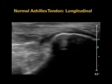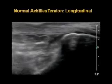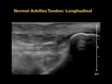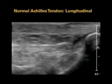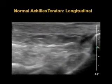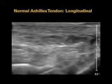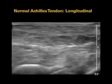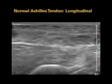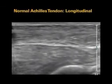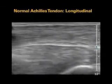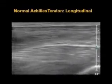The normal Achilles tendon appears linear, fibrillar, and echogenic as demonstrated in this video clip. As we scan proximally, the Achilles tendon blends with its muscles of origin, the gastrocnemius and deeper soleus.